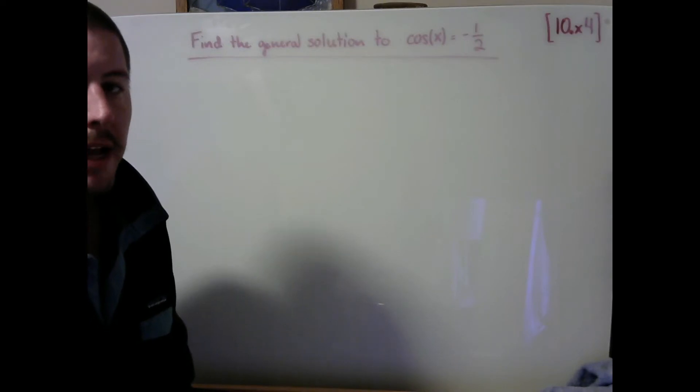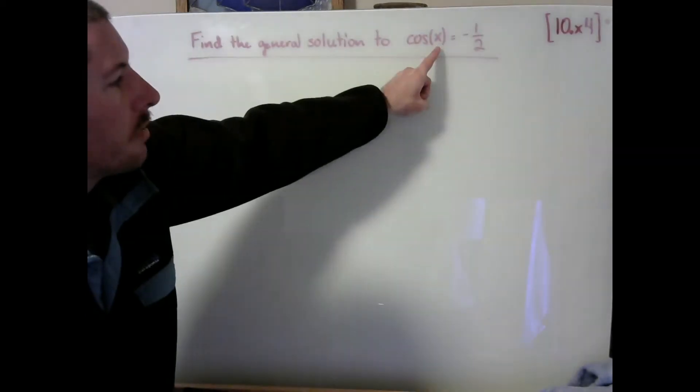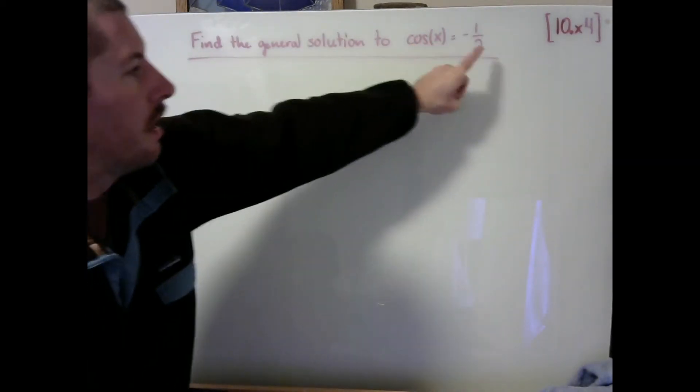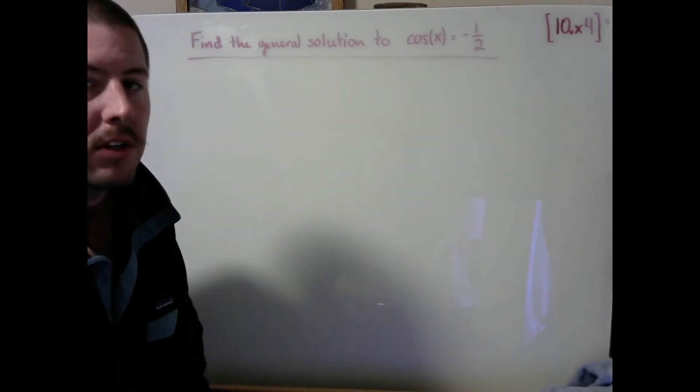We can verbalize this equation alternatively as saying what angles will result in a width of negative 1 half on our unit circle.